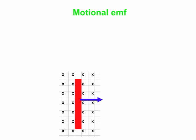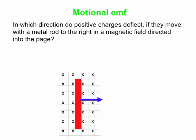So this is an example where the velocity, the length, and the magnetic field are all mutually perpendicular to one another. And we can apply our E equals minus VLB equation.